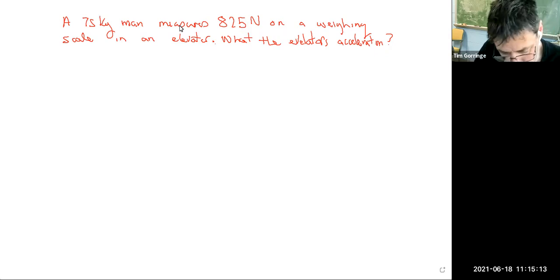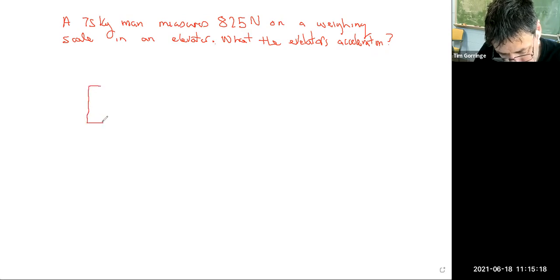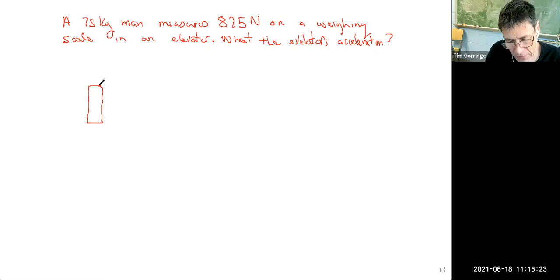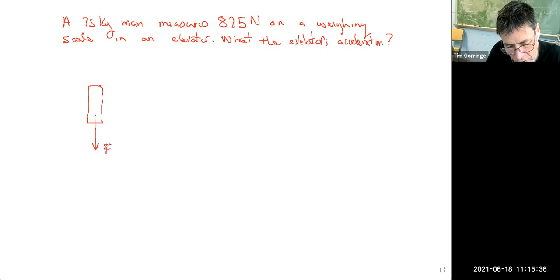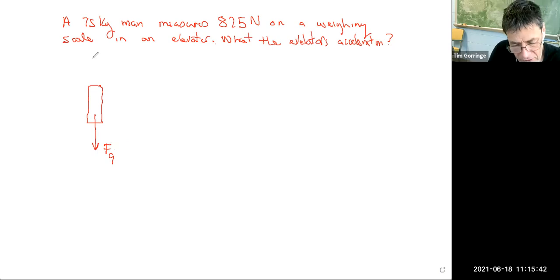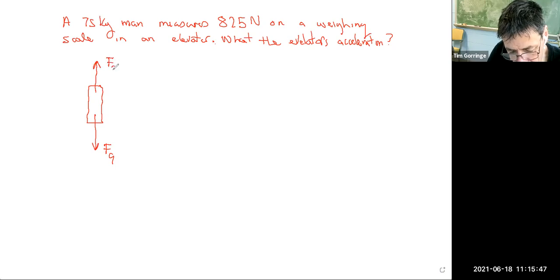Let's draw a picture of this problem. Here's the man — the rectangular man. There are two forces that we need to worry about that are acting on the rectangular man. There's the force of gravity downwards — I'll use Fg to indicate that, thinking about just its size. And then there's the force of the weighing scales upwards, which I'll indicate with Fs.